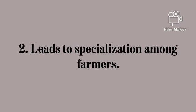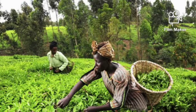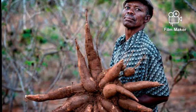It leads to specialization among farmers. When farmers participate in growing one type of crop over and over again, from one season to another, they tend to become perfect. They tend to improve on the practice of growing that type of crop and become specialized in that crop production. For instance, growing cassava or maize — when farmers do it over and over again, they become good at it.